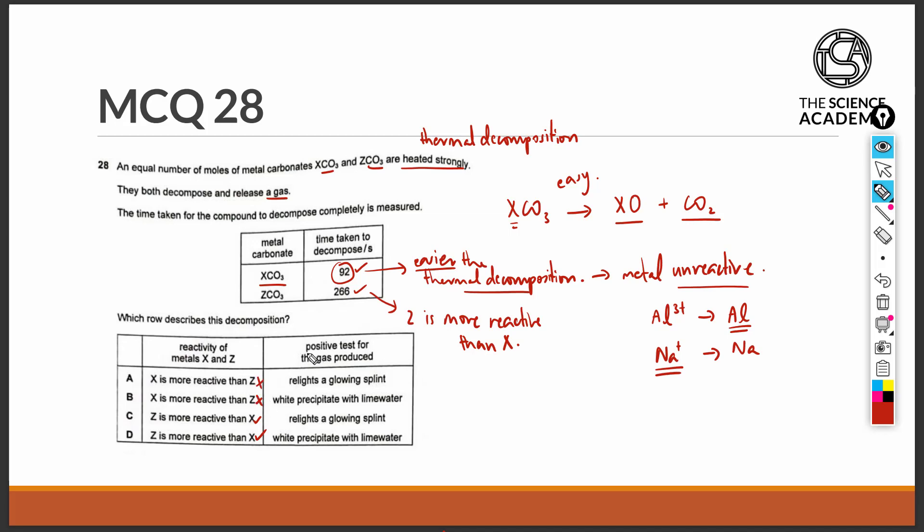And the positive test for the gas that is produced, which is carbon dioxide gas, is going to be the test of bubbling carbon dioxide gas into lime water, which should give a white precipitate for the positive results. Therefore, D will be the correct answer. Thank you.